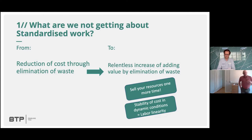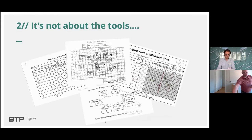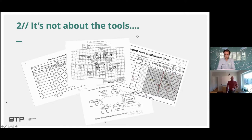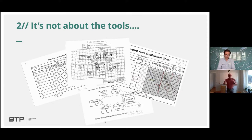Another outcome is the stability of cost in dynamic conditions — and we know we've had dynamic conditions over the last couple of years. This leads to what we call labor linearity: how do we keep costs stable when demand goes up and down? Using standardized work is one of the ways we can do that. It's not about the tools — the tools are very useful, but tools themselves won't get you to the ultimate goal of standardized work. There are literally a million different templates you can use.